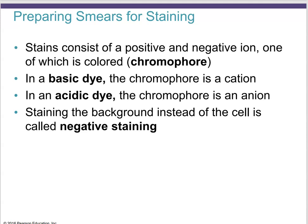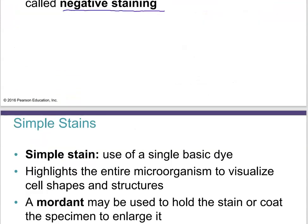The color portion of a dye is called the chromophore. In a basic dye, the chromophore is a cation — a positively charged ion. In an acidic dye, the chromophore is an anion. When you stain the background instead of the cell itself, that is called negative staining. Negative staining is typically used for capsule staining because capsules are waxy and don't pick up any kind of dye, so you stain everything except what you want to look at, and it pops out.